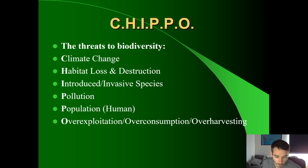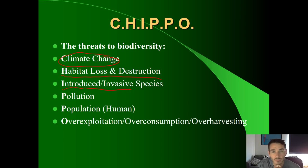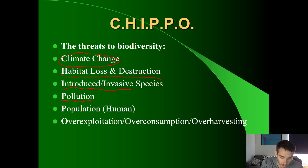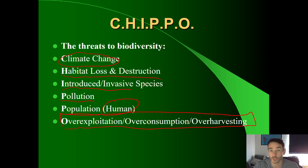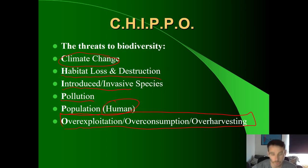So here's CHIPPO — let's break it down. The C stands for climate change, the H stands for habitat loss and destruction, the I stands for introduced or invasive species — organisms brought into an ecosystem that weren't originally there and cause some disruption. The first P stands for pollution, the second P stands for human population, and the O stands for over-exploitation, over-consumption, or over-harvesting.